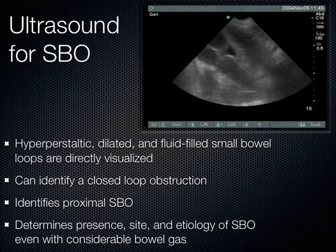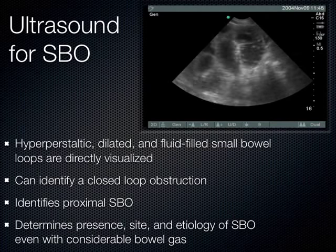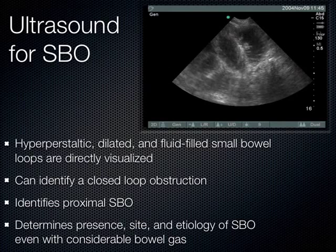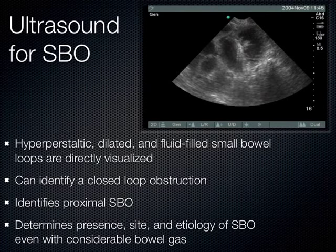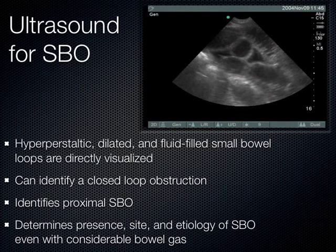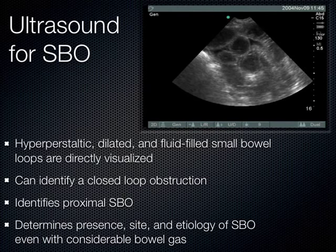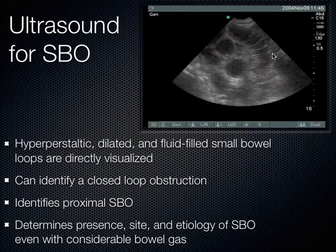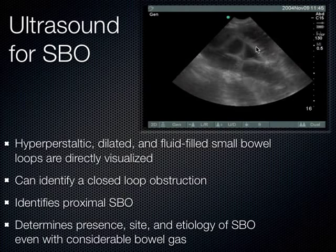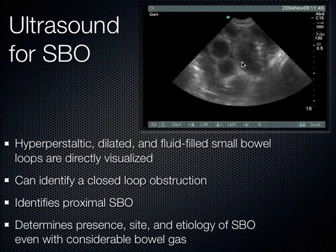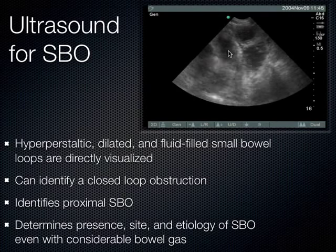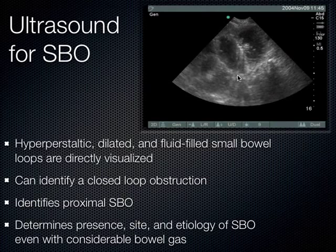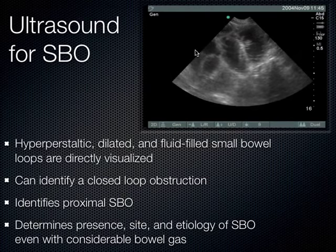What we see initially are hyperperistaltic, dilated, and fluid-filled small bowel loops directly visualized with ultrasound, evidenced by their plicae circulares — telling us this is indeed small bowel. This patient had such a bad small bowel obstruction there was perforation, and fluid leaked out between the loops of bowel. Fluid is always black on ultrasound, and we can see these anechoic wedges of free fluid between the different loops of bowel.